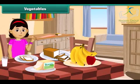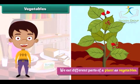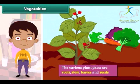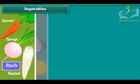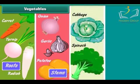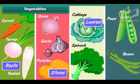We get our food from plants. The various parts of a plant are eaten as vegetables. The various plant parts are roots, stem, leaves and seeds. Carrots, turnips and radish are roots. Potatoes, onions and garlic are stems. Spinach and cabbage are leaves. Peas and beans are seeds.